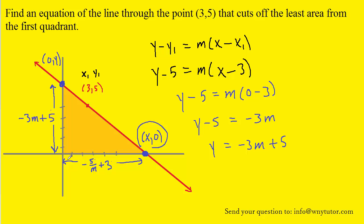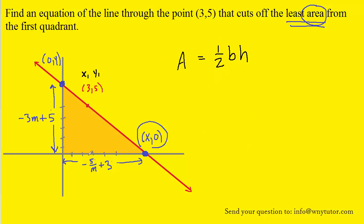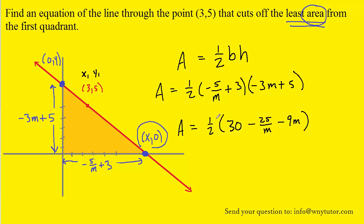We've been able to express the horizontal distance — the base of the triangle — in terms of m, as well as the height of the triangle also in terms of m. Since we're trying to calculate the least area, we need the area formula for a triangle: one-half base times height. The base is negative 5 over m plus 3, and the height is negative 3m plus 5. We foil the two terms in parentheses, then distribute the one-half to each of the three terms, giving us a simplified equation for the area of the region enclosed in the first quadrant.